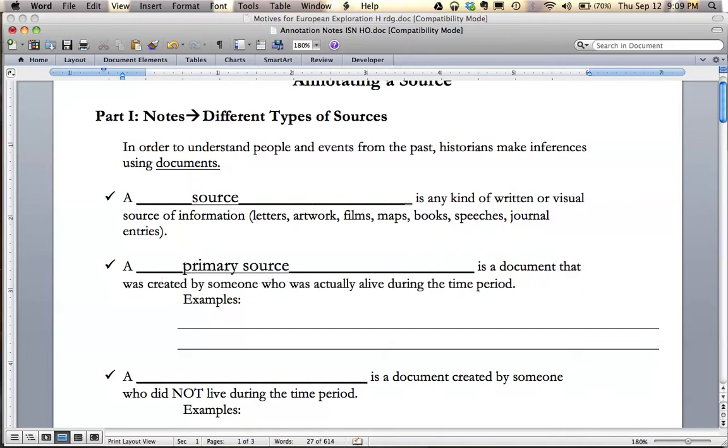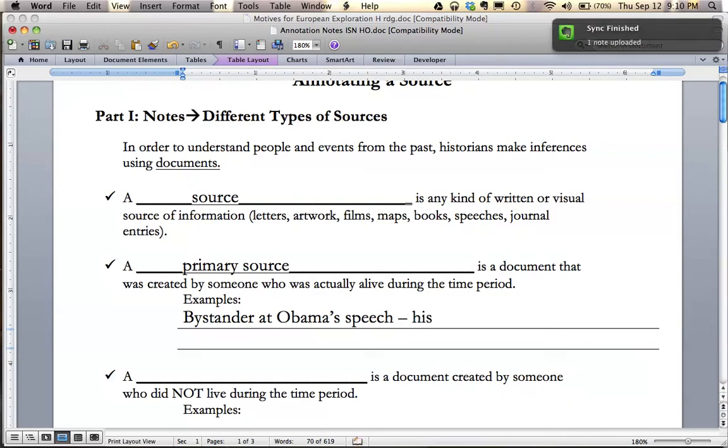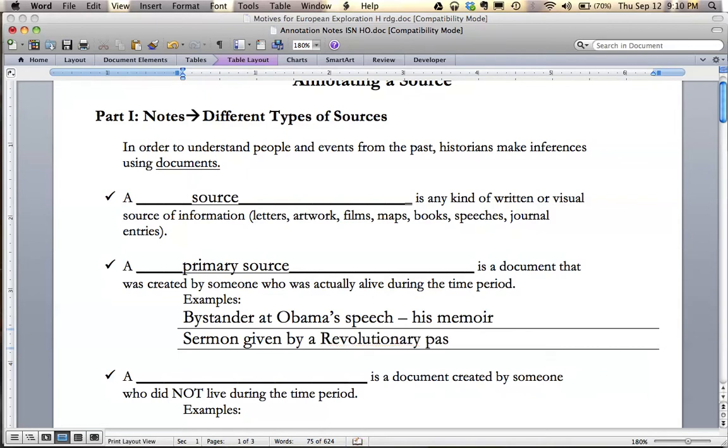A primary source is a document that was created by someone who was actually alive during the time period. So you can think about that as primary. That means they were the first people on the scene. They witnessed it with their own eyes. Some examples would be like a bystander at Obama's speech. So if he wrote a memoir, then what he said would be a primary source. Another example from history would be a sermon given by a revolutionary pastor. So anything that he says, maybe he's commenting on a historical event, that would be considered a primary source because he was living in that time period and he was part of that era.